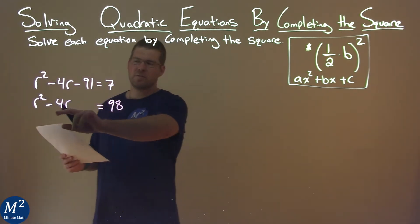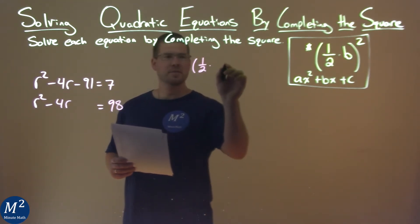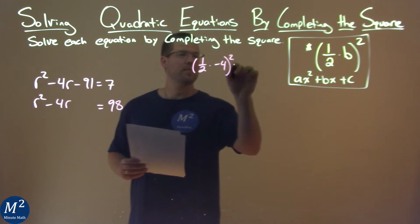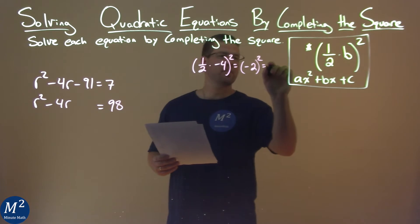Now, I look at my B value, negative 4. Let's use our formula: 1 half times B, which is negative 4, squared. Well, 1 half times negative 4 is negative 2, squared. That's a positive 4.